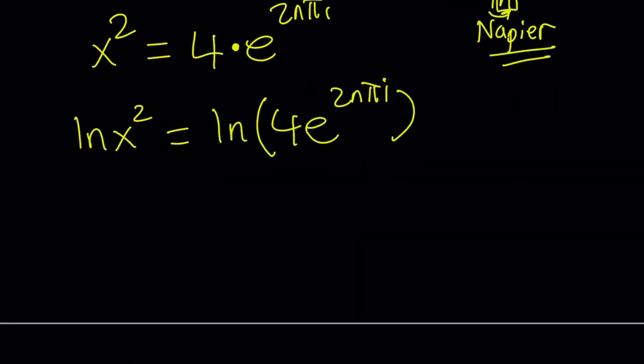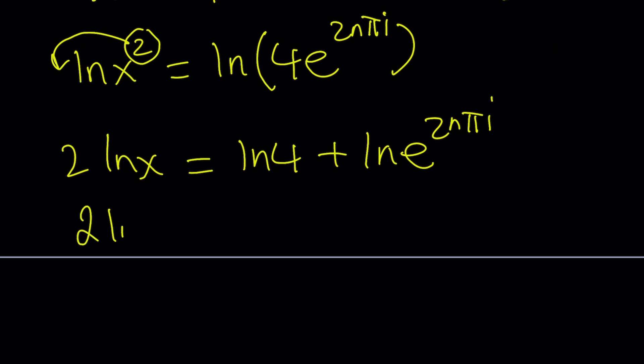So we're going to ln both sides. And ln-ing both sides is kind of good because we have e. That's going to help us. And now we have ln x squared. We're going to bring this 2 to the front, 2 ln x. And then we're going to separate this, ln 4 plus ln e to the power 2n pi i. Obviously, there's a couple of things we can do here. 2 ln x equals ln 4 can be written as ln 2 squared and that can be written as 2 ln 2. And then this guy, we can bring it to the front and ln e is going to be 1. So we can just write 2n pi i.